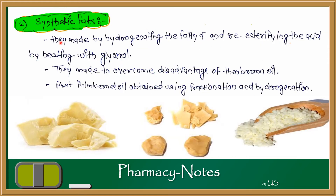Synthetic fats are made by hydrogenating fatty acids and re-esterifying the acids by heating with glycerol. They are made to overcome the disadvantages of theobroma oil — the melting point problem, lubrication problem, and others. Palm kernel oil is obtained using fractionation and hydrogenation, and is used as a synthetic fat.